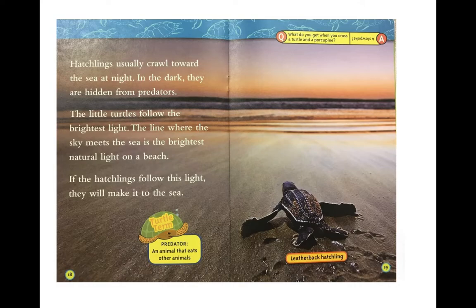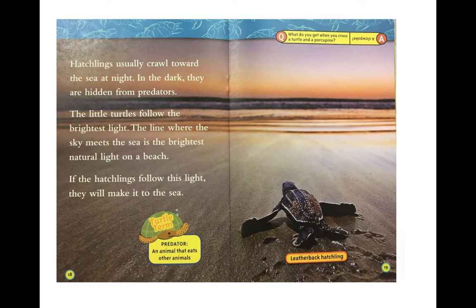Hatchlings usually crawl toward the sea at night — in the dark they are hidden from predators. The little turtles follow the brightest light. The line where the sky meets the sea is the brightest natural light on a beach. If the hatchlings follow this light, they will make it to the sea. Turtle term: a 'predator' is an animal that eats other animals. Riddle: what do you get when you cross a turtle and a porcupine? A slow poke!